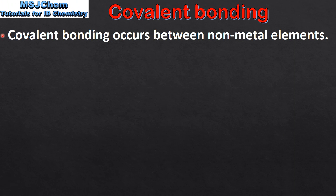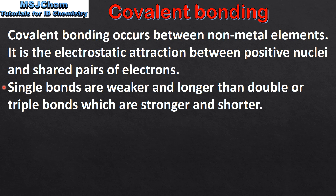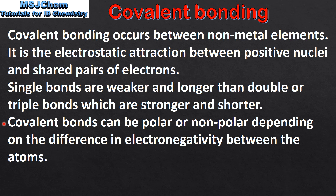So let's end with a summary. Covalent bonding occurs between non-metal elements. It is the electrostatic attraction between positive nuclei and shared pairs of electrons. Single covalent bonds are weaker and longer than double or triple covalent bonds, which are stronger and shorter. Covalent bonds can be polar or non-polar depending on the difference in electronegativity between the atoms.